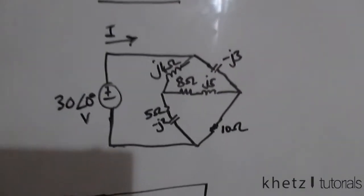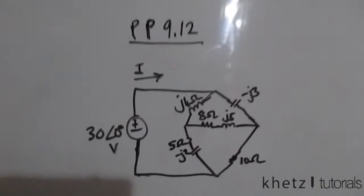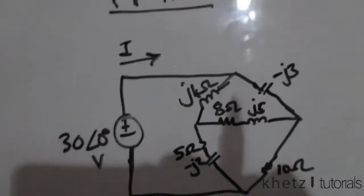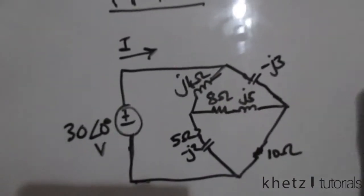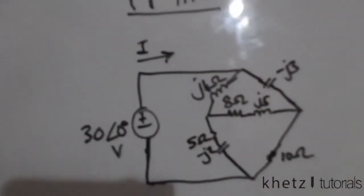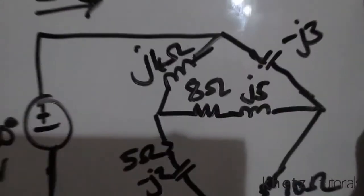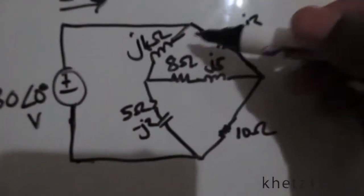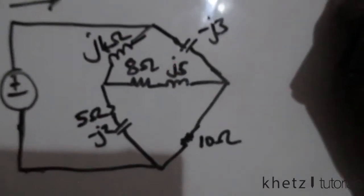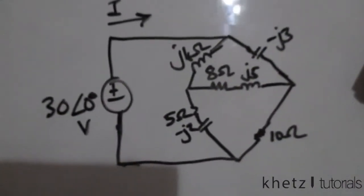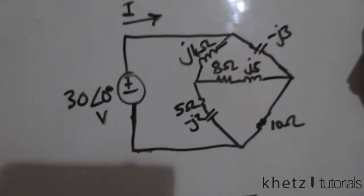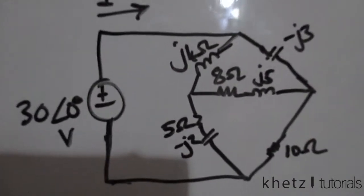Welcome to CAT's Tutorials. In this video I'll be covering practice problem 9.12. Given this problem, we are asked to find I, which is the current. As you can see, none of the impedances are in series or parallel, which calls for a Y-Delta transformation.